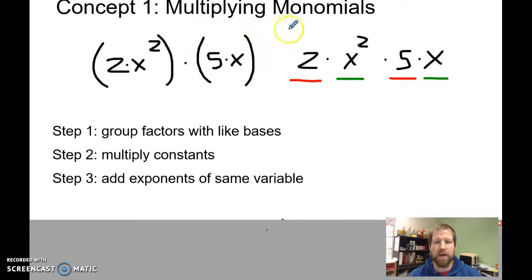When we're multiplying, we don't have to worry about the fact that this one is x squared and this one is just x, because we're multiplying them together. You can think of it like fractions. If the denominators are different, we can't add them or subtract them, but we can multiply them.